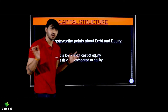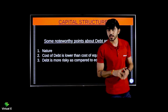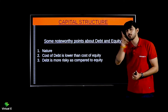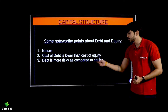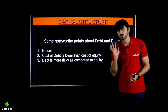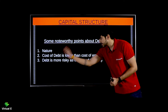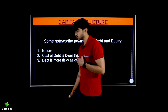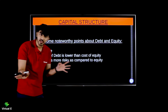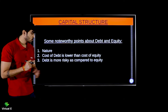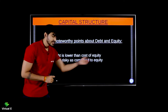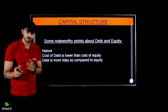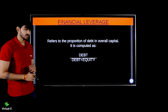Next: debt is more risky as compared to equity. Even if the company is not earning profit, it still has to pay the interest on debt. But if the company is not earning profits, it does not have to pay anything to equity shareholders. For example, during the COVID-19 lockdown, almost everyone's earnings were nil - they were not earning anything - but still, interest on all existing loans had to be paid. Equity shareholders, however, did not need to be paid.